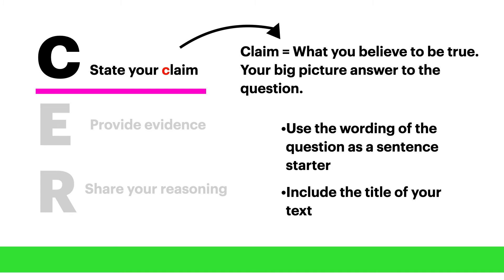The C stands for claim. You will start your paragraph by stating your claim, which is what you believe to be true. It's your big picture answer to the question. It helps to use the wording of the question as a sentence starter, and you always want to include the title of your text as you start your claim.